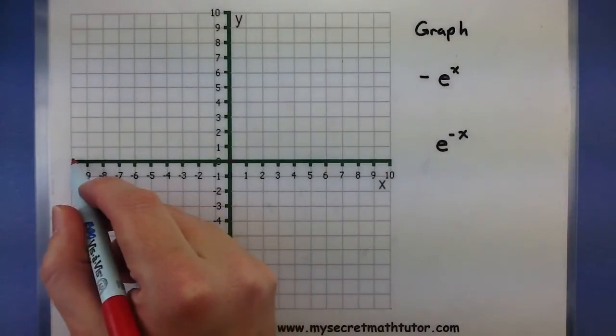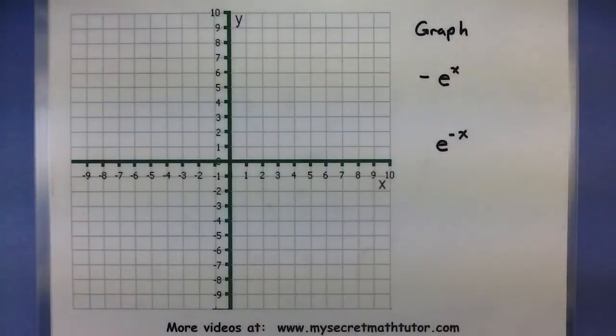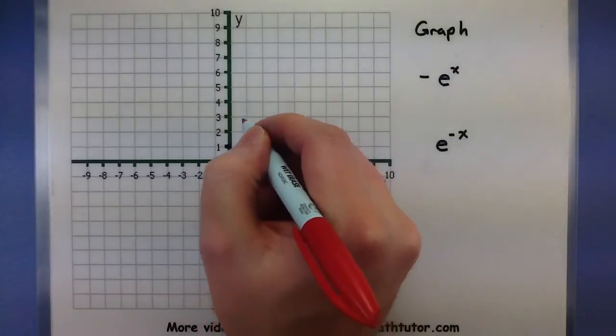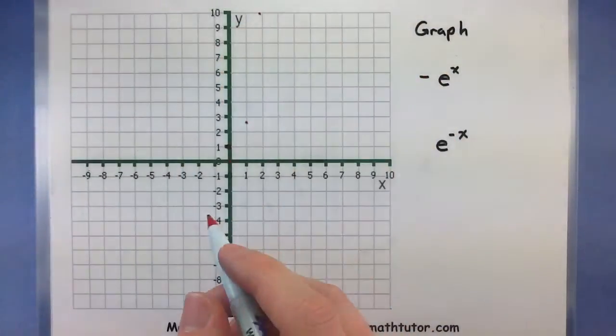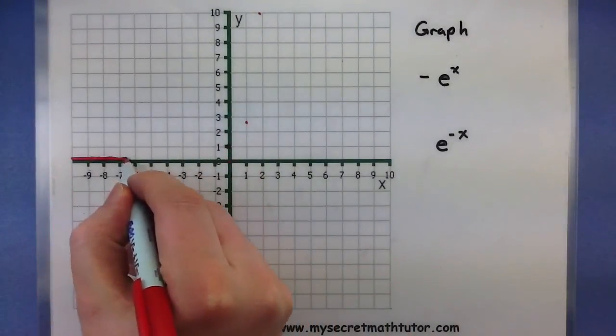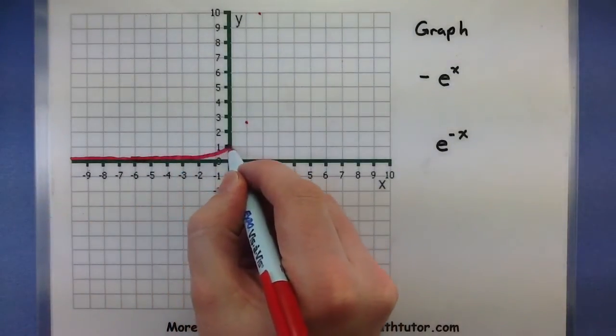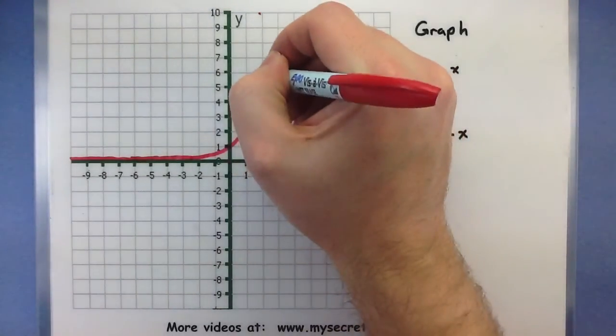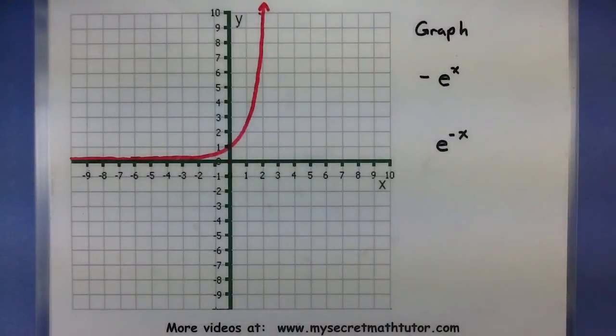In this exponential function, I know that it starts off nice and small, goes through one, and then grows really quickly. Let's go ahead and put in those key features. So I know it goes through here, it's going to be a little bit larger than two by the time it hits there, and it's probably going to be off the chart by the time it hits two. All right, so that is my graph of e^x.